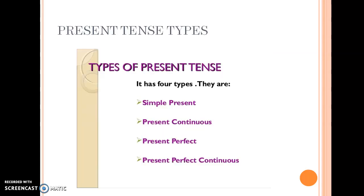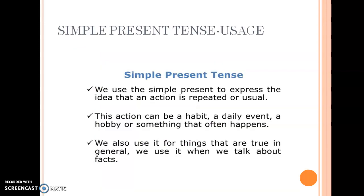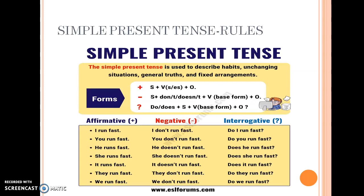There are three kinds of tenses: present, past, and future. Today we'll be dealing with present tense. Every tense has four subtypes: simple, continuous, perfect, and perfect continuous. Let's begin with the first subtype — simple present tense. Simple present tense is used to talk about things that happen on an everyday basis, things that are part of your daily routine, your habits, and general truths or scientific facts which do not change.